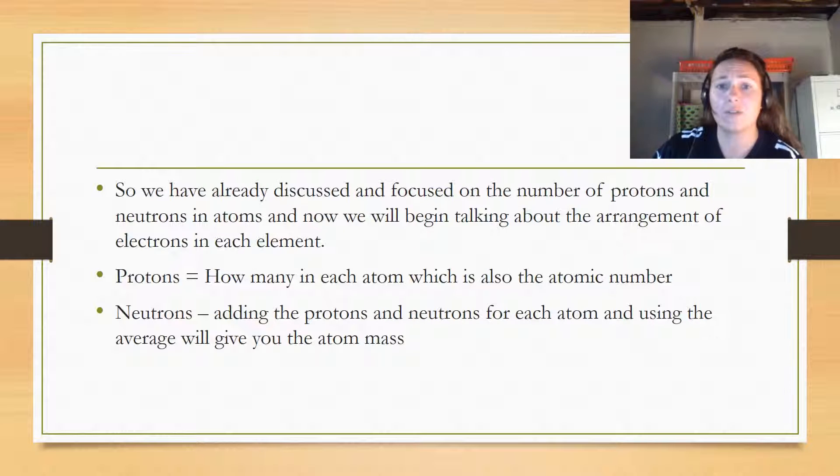We have already discussed and focused on the number of protons and neutrons in atoms. Now we're going to begin talking about the arrangement of electrons in each element. Protons tell us how many are in each atom, which is also the atomic number. Neutrons, when you add the protons and neutrons together and average it, that's where we get the atomic mass.